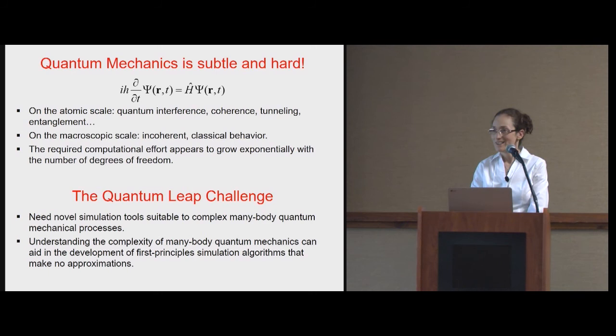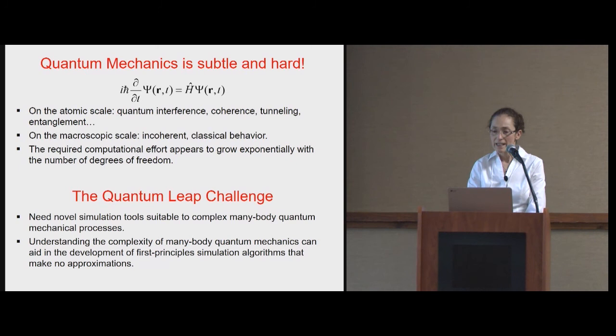Quantum mechanics is hard and also very subtle. We have the time-dependent Schrödinger equation that gives us the evolution of the wave function. It has all kinds of peculiar features. If we look at the atomic scale - single atom, molecule - we see fascinating effects like quantum interference, coherence, tunneling, and entanglement. At the same time, on the macroscopic scale in condensed phase systems with lots of atoms together, what we observe is typically incoherent behavior and classical laws. It's really very interesting how this works.